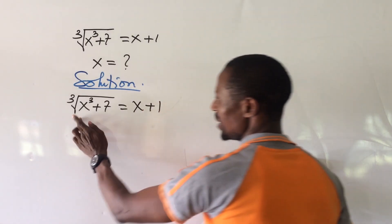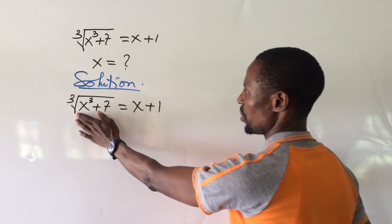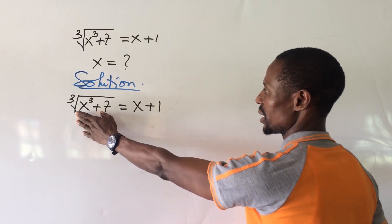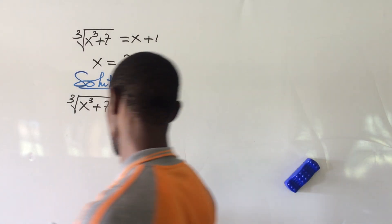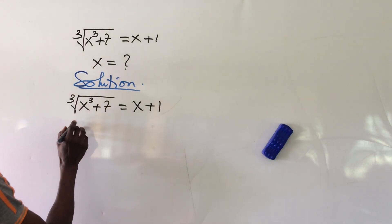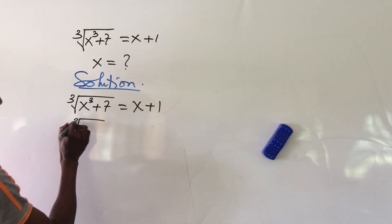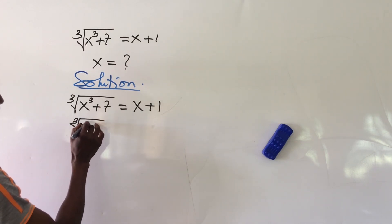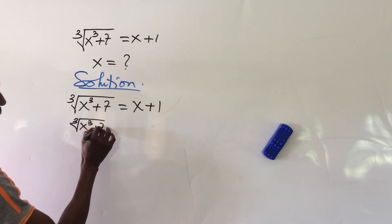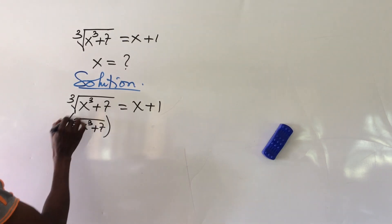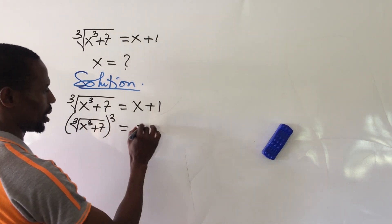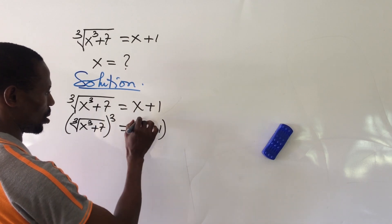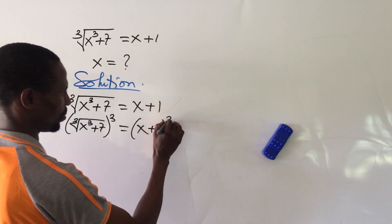Now, having this radical here, what do we do to eliminate it? We take the cube of both sides of the equation. So if we take the cube of both sides, we have the cube root of (x³ + 7) raised to the cube, equal to (x + 1) raised to the power of 3.